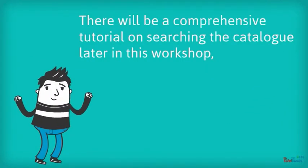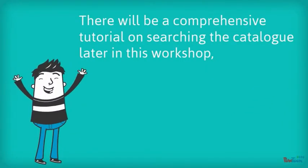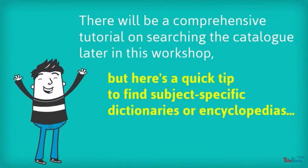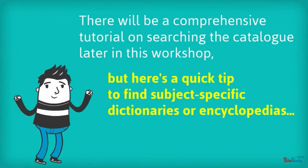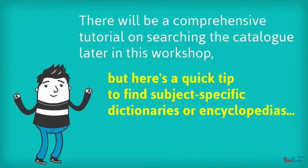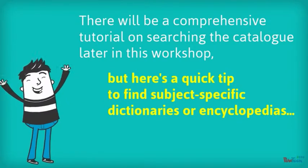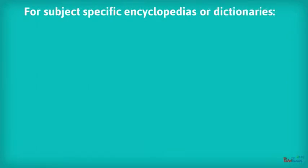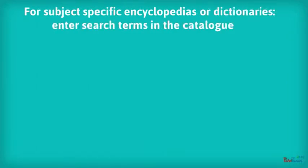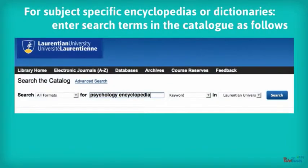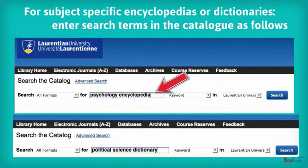There will be a comprehensive tutorial on searching the catalog, but for now, here are some hints. To find subject-specific encyclopedias or dictionaries, enter the search terms into the catalog as follows: enter the name of the discipline you're interested in, along with the word 'encyclopedia' or 'dictionary'.